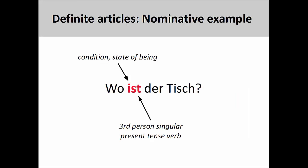As you continue your study of German, which has a more flexible syntax than English, you will find that definite articles will be essential for determining what noun is the subject of the sentence and what noun receives the action performed by the subject.